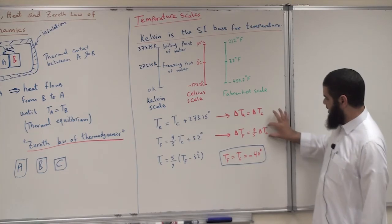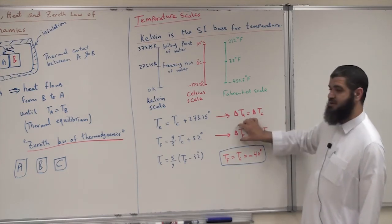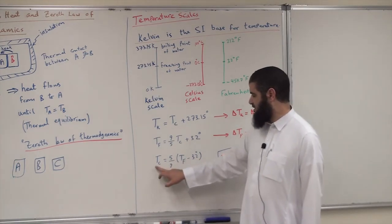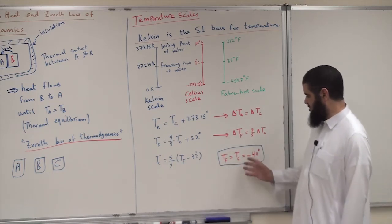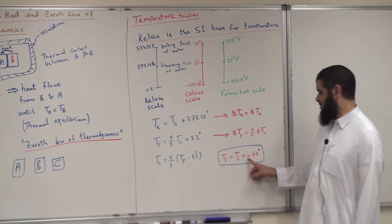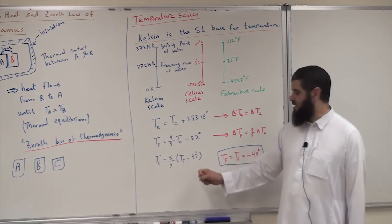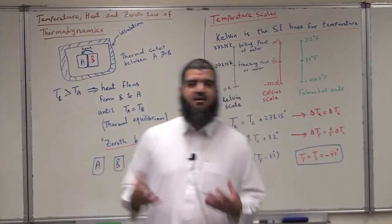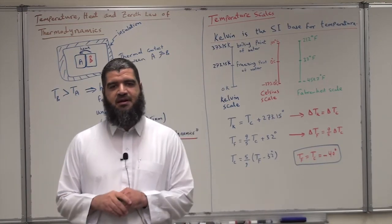To summarize: every 5 degrees on the Celsius scale results in 9 degrees change on the Fahrenheit scale. We can also find T_C from T_F using the inverse relationship. One interesting observation is that the two scales are equal at −40 degrees — if you plug −40 into either conversion formula, you get −40 on the other side. So −40°C equals −40°F.